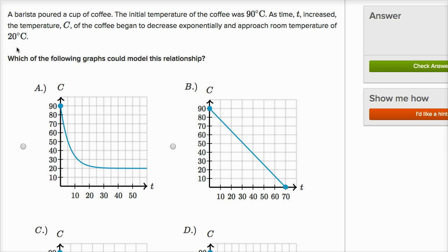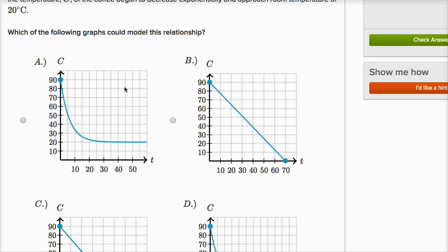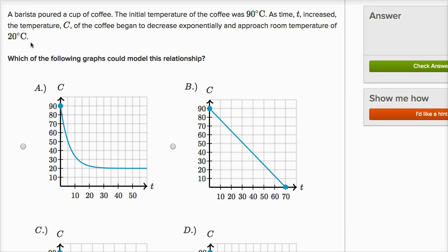Which of the following graphs could model this relationship? So we're starting at 90 degrees Celsius. It looks like all of the graphs start at 90 degrees Celsius at T equals zero. And we are going to approach the room temperature of 20 degrees Celsius. So this first one does approach the room temperature of 20 degrees Celsius as T increases.